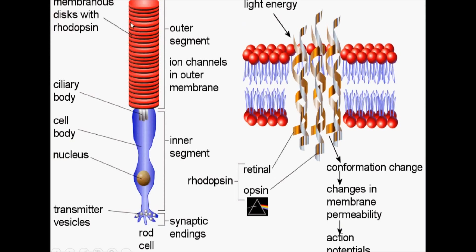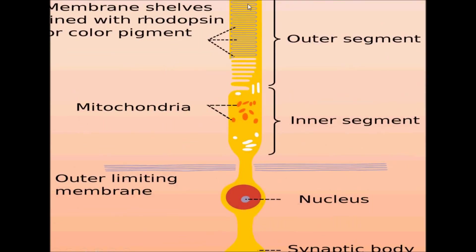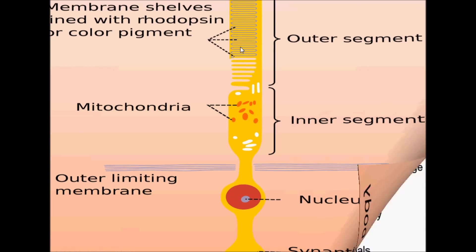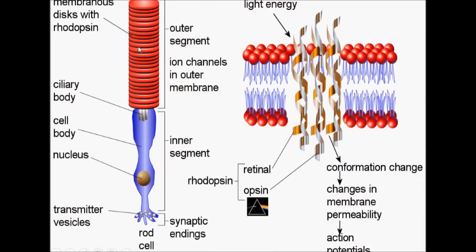The outer segment contains membranous discs with rhodopsin pigment — these disc-shaped shells are lined with rhodopsin. The inner segment contains ciliary bodies. The cell body contains the nucleus, and neurotransmitters travel from one rod cell to another through transmitter vesicles. These are the synaptic endings of the rod cell.